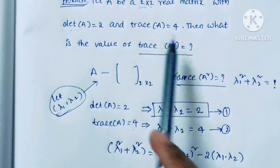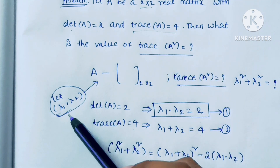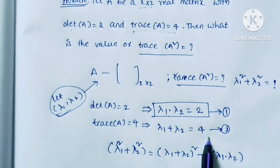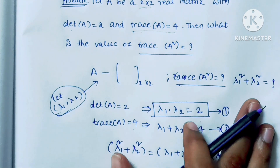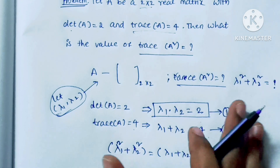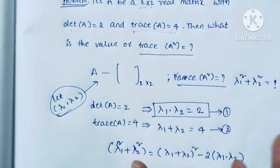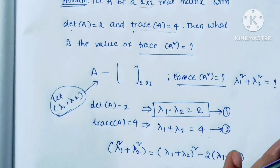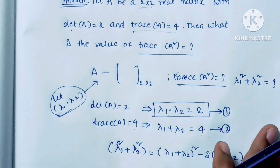Trace of A equal to 4, so sum of the eigenvalues equals 4. For this you have to know the eigenvalues and eigenvectors properties. Then only you can easily find the relation between these and find the solution using eigenvalue and eigenvector properties.